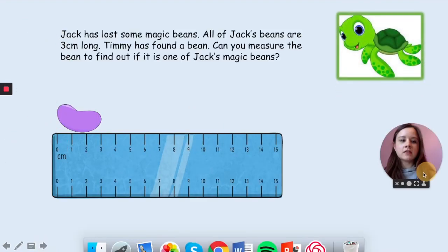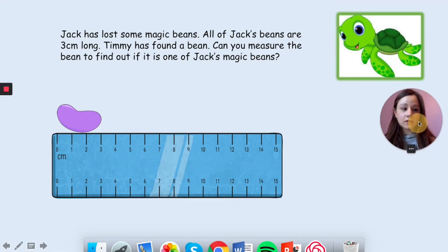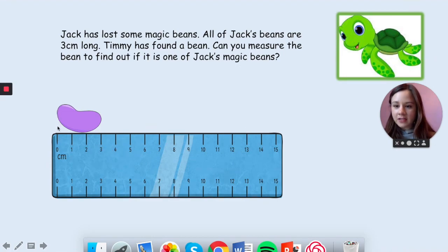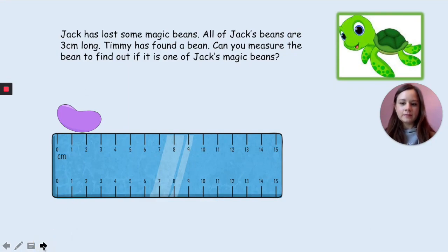Jack has lost some magic beans. All of Jack's beans are three centimeters long. Timmy has found a bean. Can you measure the bean to find out if it is one of Jack's beans? We check, we make sure that our bean is on zero, which it is, and then we go to the other end and see which number it lands on. It lands on three. If we look back at our question, all of Jack's beans are three centimeters long and this bean is three centimeters long. Yes, it's one of Jack's magic beans.